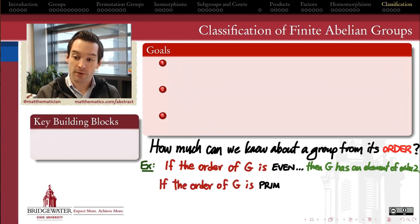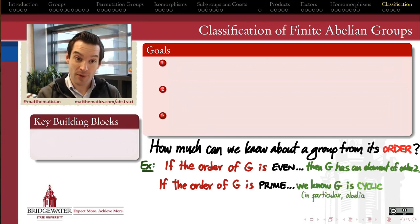Another thing that we learn about groups just from their order is if the order of a group is a prime number, then we have this really powerful theorem that completely classifies the structure of that group. Every group whose order is prime is a cyclic group of that prime order. So it's isomorphic to Z mod p, where p is the prime that is the order of the group.